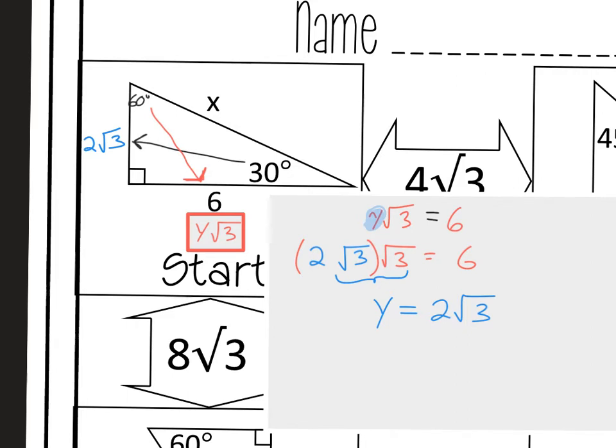So I know that this X value, this hypotenuse, is just going to be double or 2 times whatever the shortest side is. The shortest side is across from 30, and we found that to be 2 root 3. So now when I finish this out, I get that X is equal to 2 times 2 is 4, so 4 root 3.